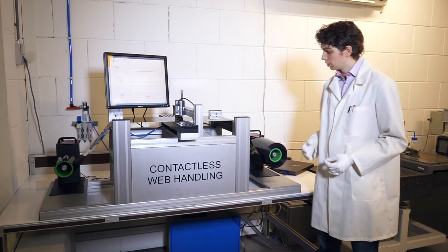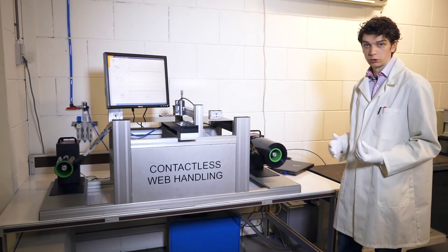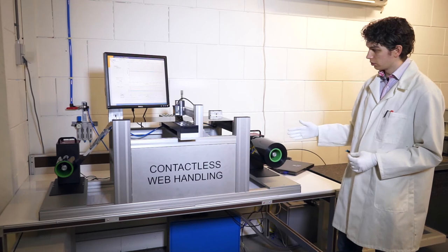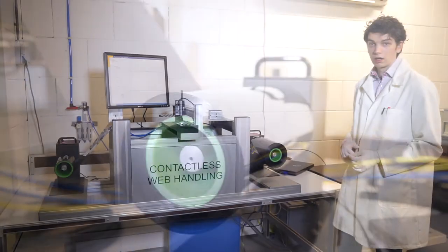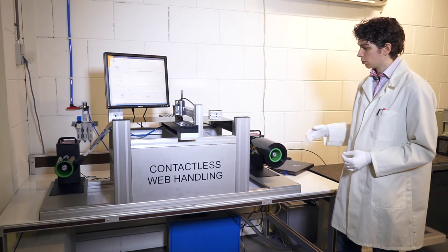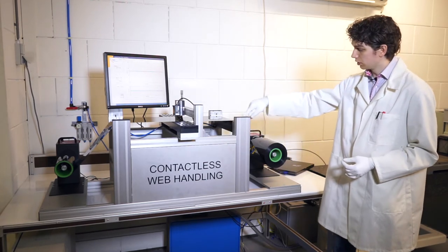Next, I can show you this setup. This is basically a small-scale roll-to-roll line, so there's a winder and an unwinder at both ends, and in between them the film is transported over two air turns.